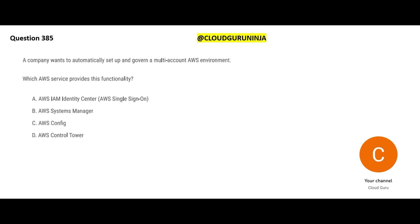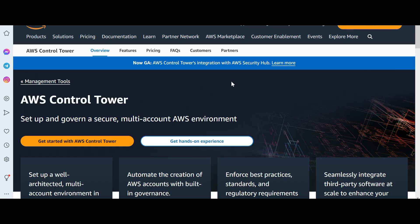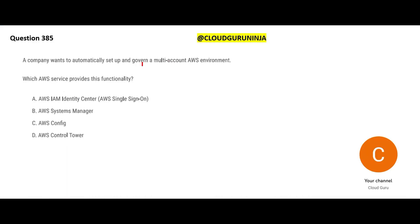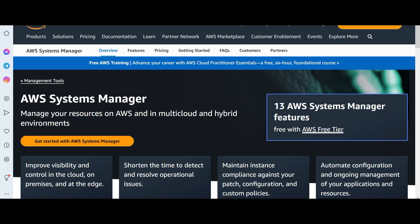The next question: a company wants to automatically set up and govern a multi-account AWS environment - which service will help with this? Let me introduce AWS Control Tower. It is not a very common service but you will get at least one question on it. Control Tower helps you with setting up and governing a secure multi-account AWS environment. Option A says use Identity Center, which is just a sign-on service - if you want to implement SSO, this will help with that, but the question is not talking about SSO.